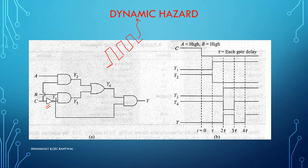Basically, 0 becoming 1 is static 0 hazard, and 1 becoming 0 is static 1 hazard. Dynamic hazard is a combination of static 0 and static 1 hazard.